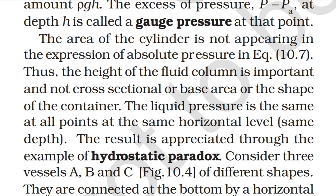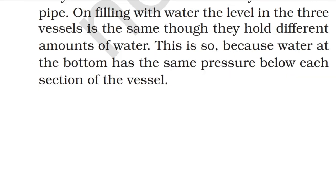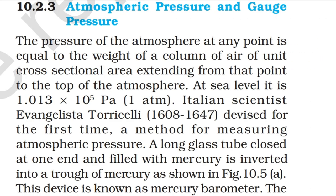This result is illustrated by the hydrostatic paradox. Consider three vessels A, B, and C of different shapes connected at the bottom by a horizontal pipe. On filling with water the level in the three vessels is the same, though they hold different amounts of water. This is because water at the bottom has the same pressure below each section of the vessel.